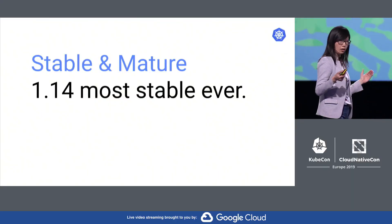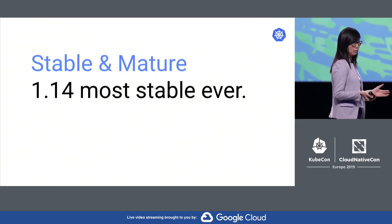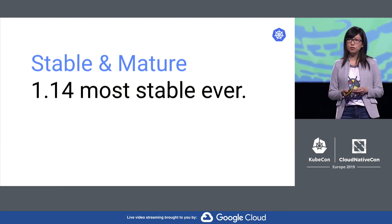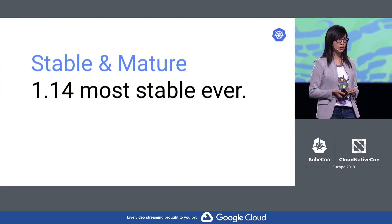And here we are at one of the biggest open source developer conferences ever, celebrating Kubernetes' five-year anniversary. At this age, Kubernetes is getting very stable and mature. The latest Kubernetes release, 1.14, has more enhancements moving to stable than ever — for example, out of 31 enhancements, 10 are moving to stable.